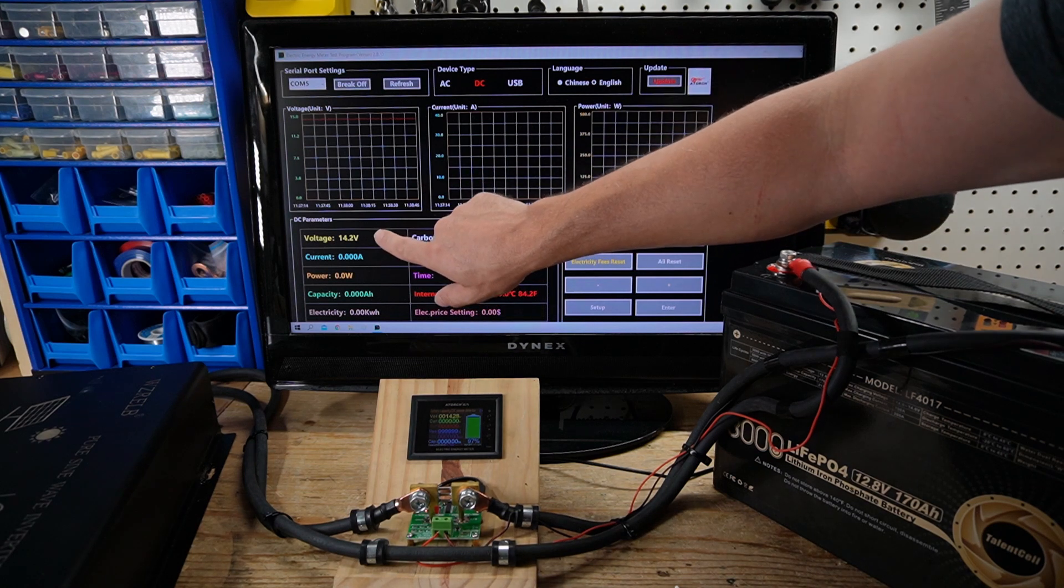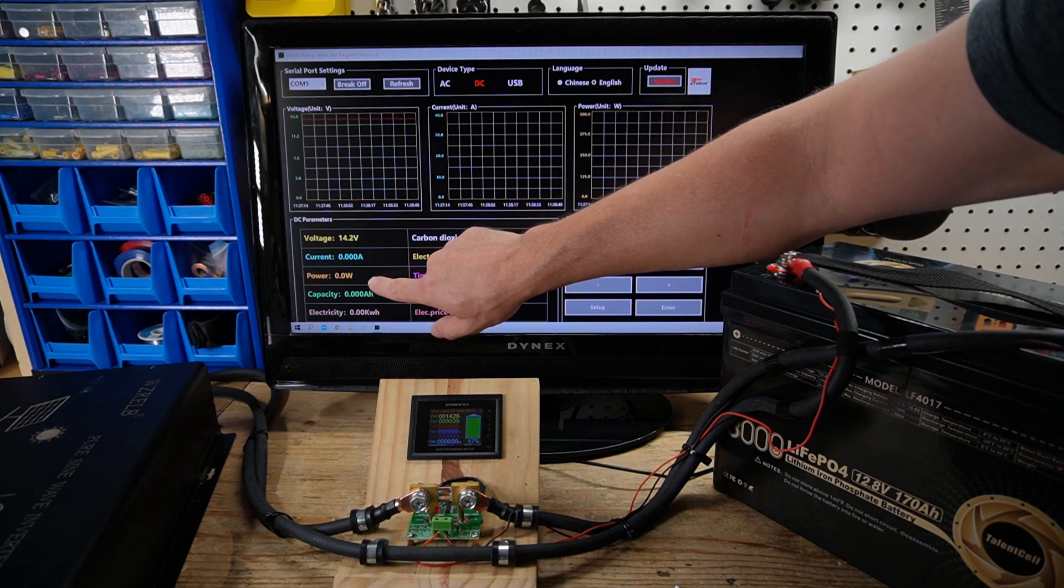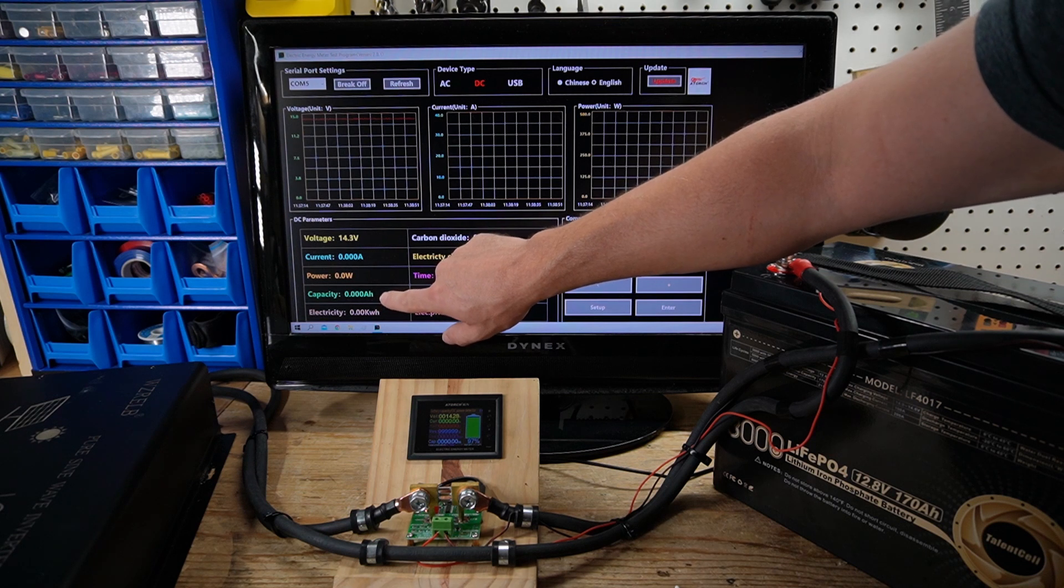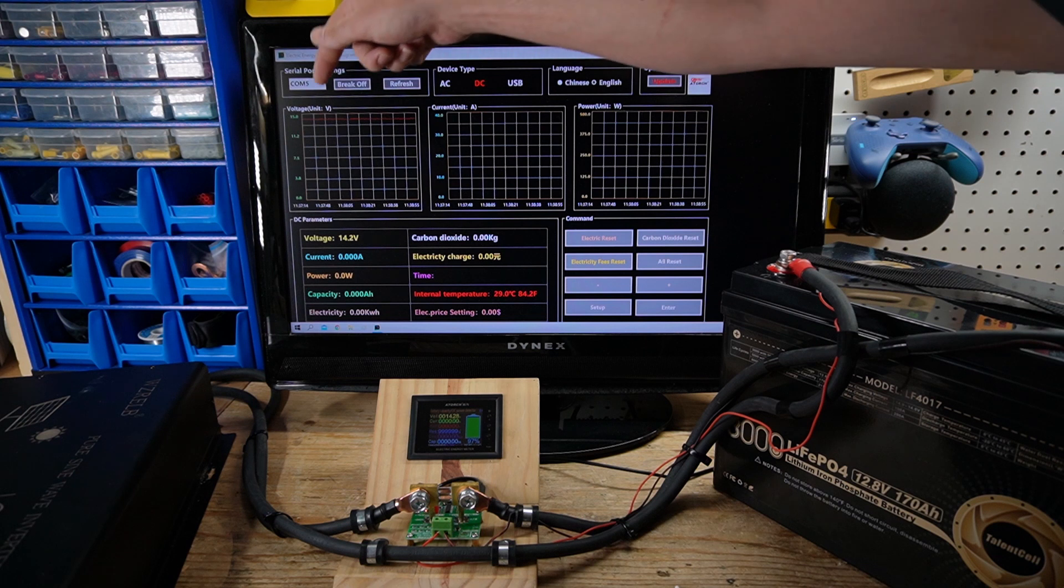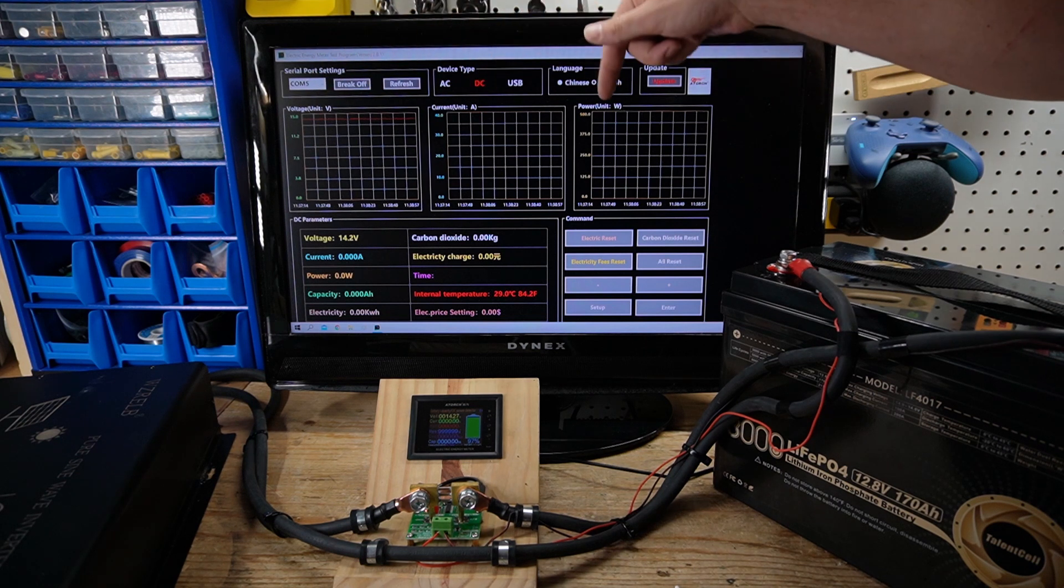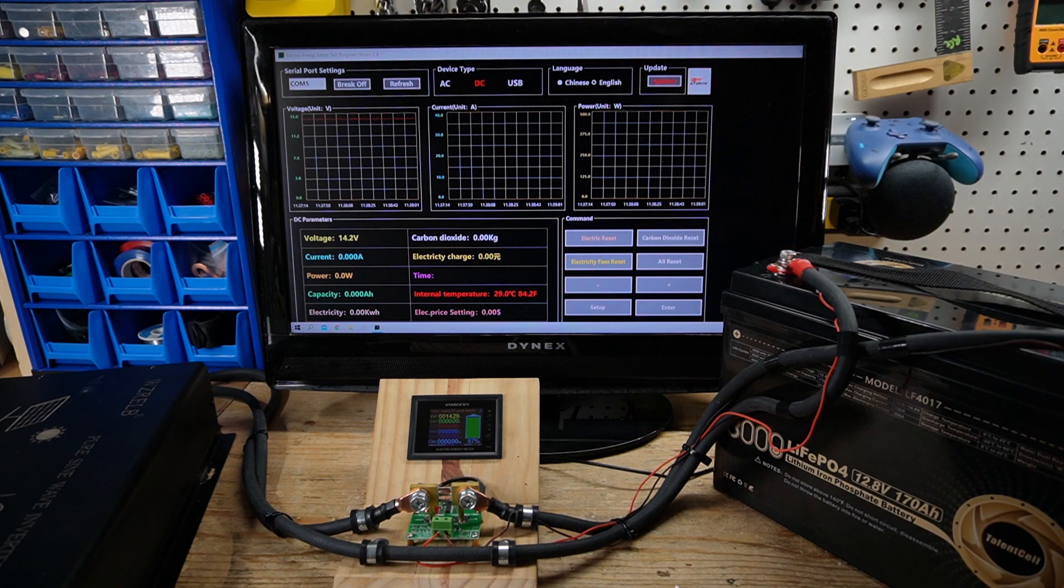On the screen here we have our voltage, our current, our watts, our amp-hour capacity, our kilowatt capacity, as well as three graphs showing the voltage, current, and wattage. So I'm now ready to start my test.